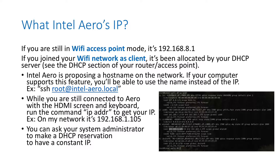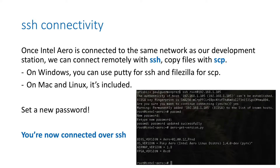In access point mode, the Intel Aero IP is always 192.168.8.1. If you are using Aero as a client in a larger Wi-Fi network, the IP depends on your router's DHCP server. Another method to find the IP is to connect a screen to Aero and run the command 'ip addr', which will show the IP allocated by your DHCP server.